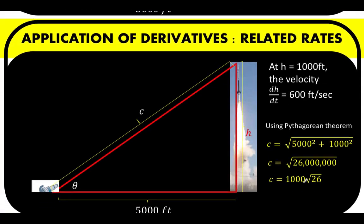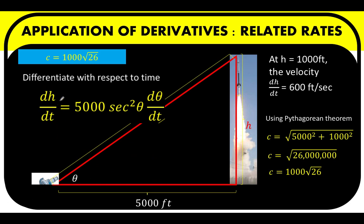Using now this value and remembering that we are solving for dh over dt given by this equation that we arrived at previously, which is 5,000 secant squared theta d theta over dt, we can now compute for this secant squared theta.